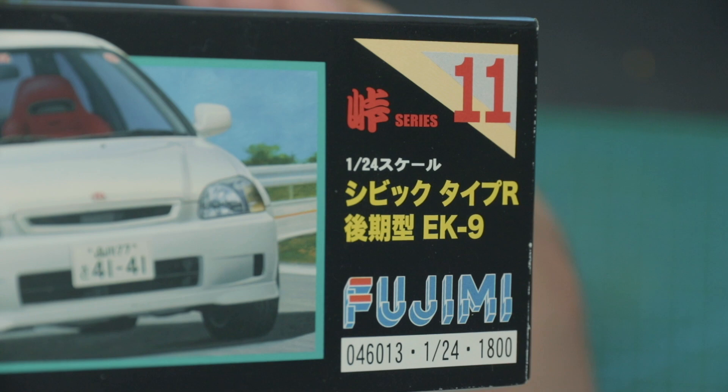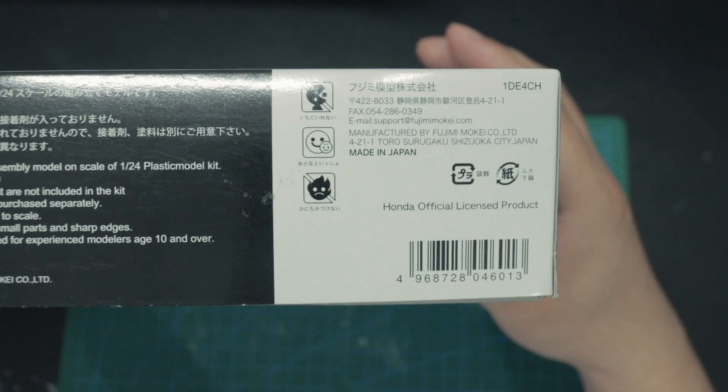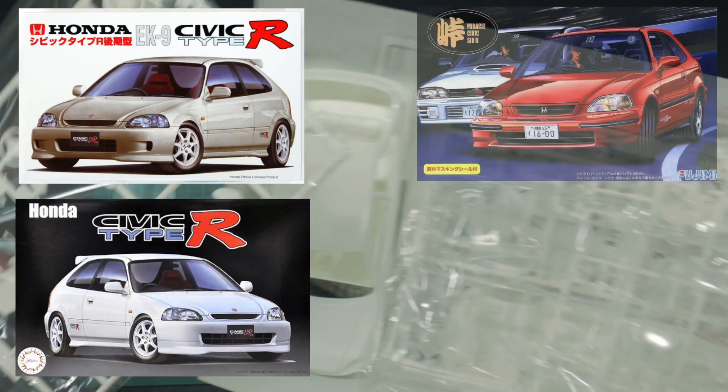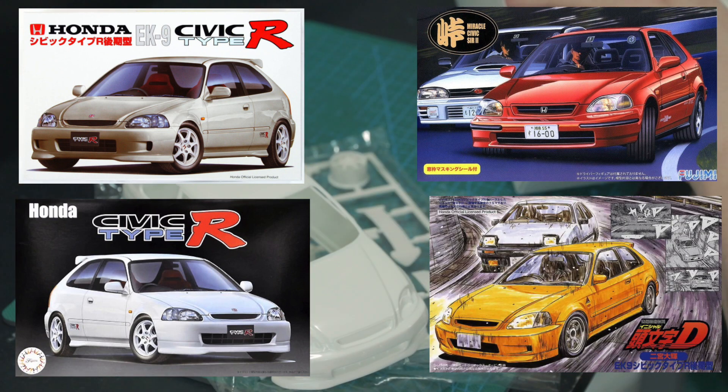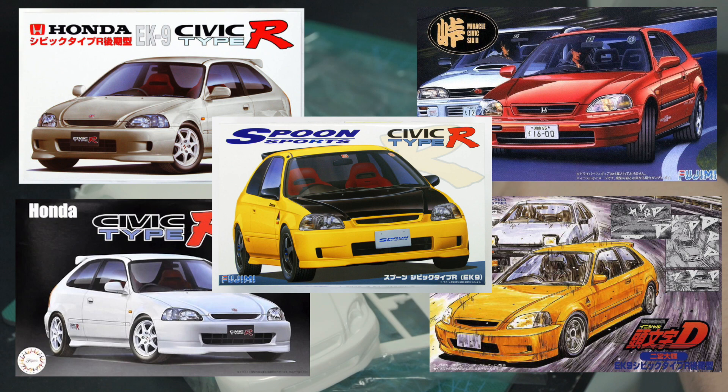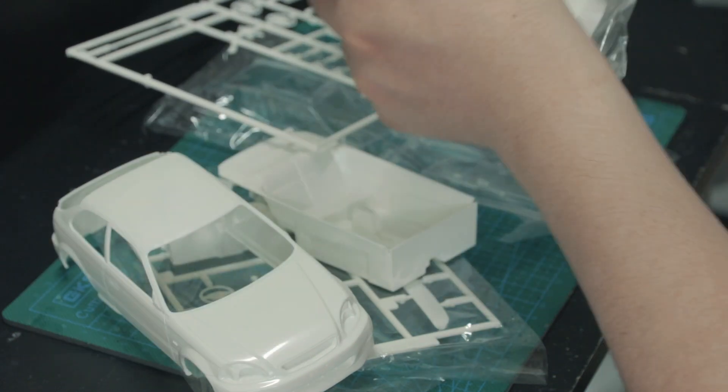This kit is made by Fujimi, and over the past years Fujimi has produced quite a few EK9 model kits. The one I have is the Type R version, but they also have the SIR2, the Initial D version, as well as the Spoon version. They don't make it anymore, which means you can only buy it from a collector as they are getting harder to find.